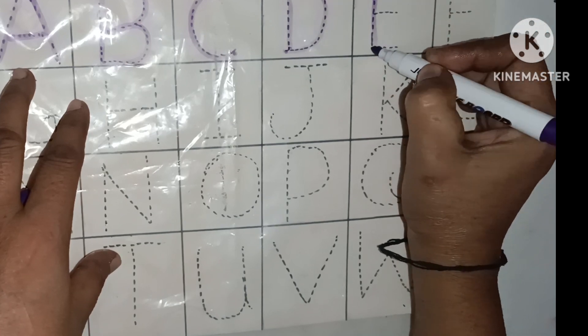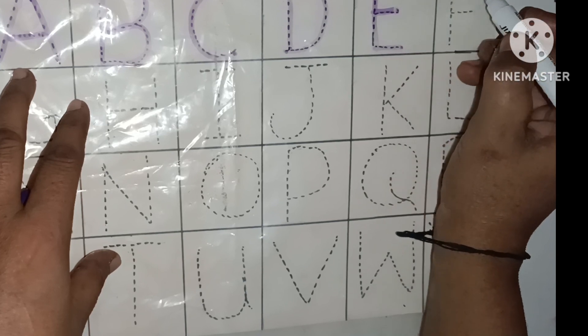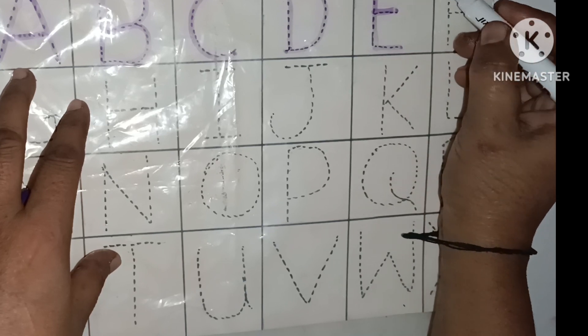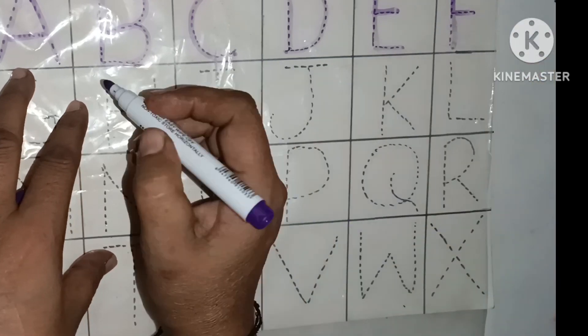E for elephant. E for elephant. F for fish. F for fish.